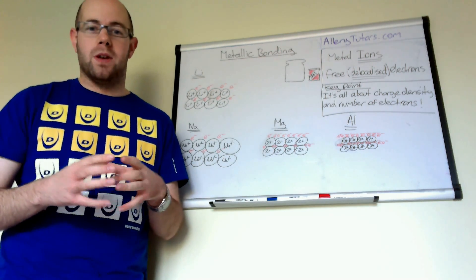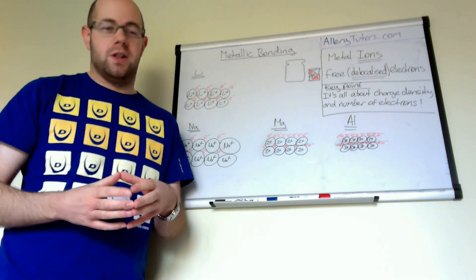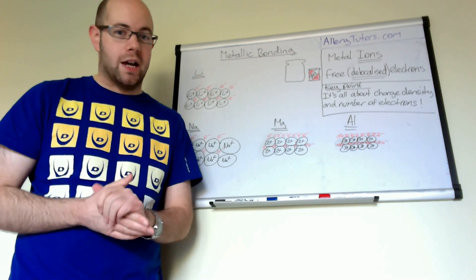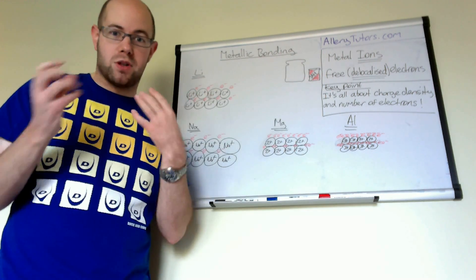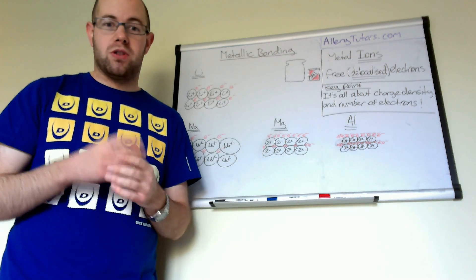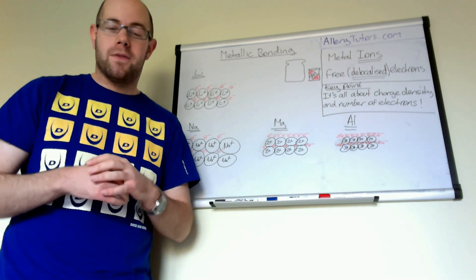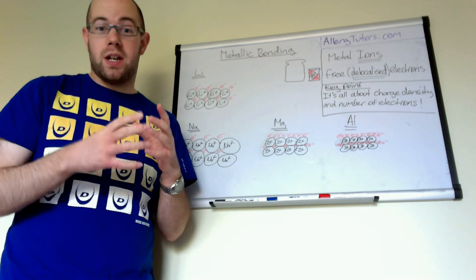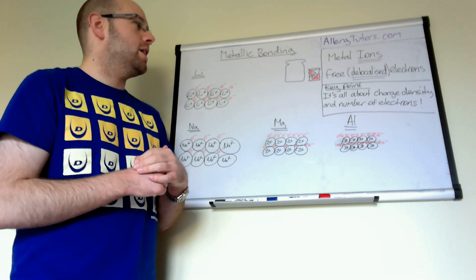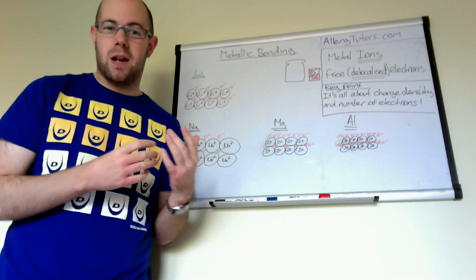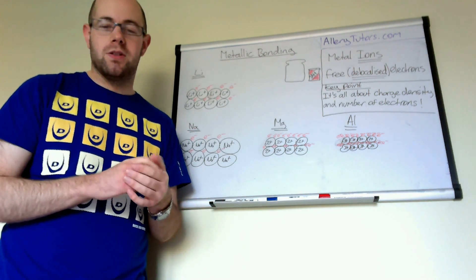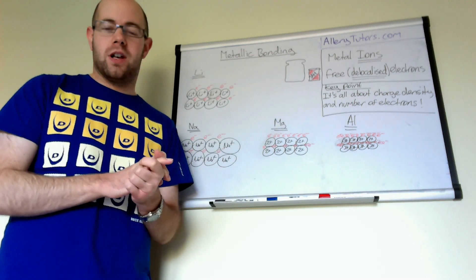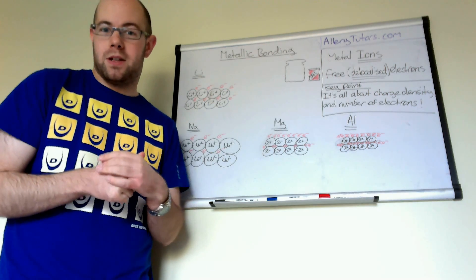Two key points that underpin this video are metal ions and free delocalised electrons. These are crucial terms when writing answers in exams. We're going to explain metallic bonding using an analogy because it can be quite abstract and difficult to understand. The analogy should help explain what's actually happening.